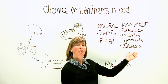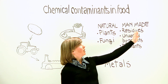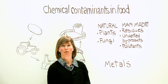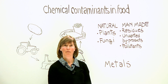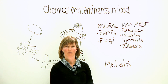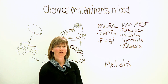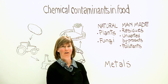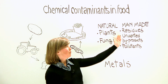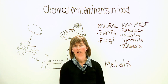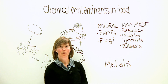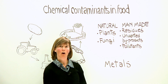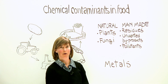Looking at the man-made contaminants, we start by looking at residues. Residues can be such things as the residues of pesticides left on crops from spraying, or those from veterinary medicines used to treat animals when the farmers are raising them. Also the residues of food contact materials can migrate into our food products. A good example of unwanted by-products of processing is acrylamide, which is formed in starchy foods when they're cooked at high temperatures. This process occurs both in the home and in the industrial process.